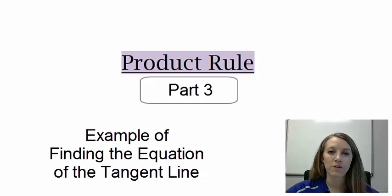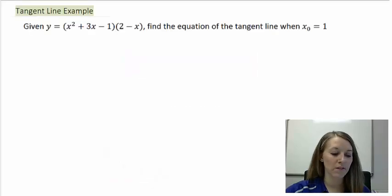So now that we've seen a few examples of using the product rule, let's go ahead and apply it in the same situations that we've applied it before. In my example here, they give us a function, and we want to find the equation of the tangent line when x0 is equal to 1.